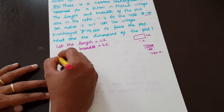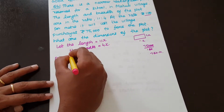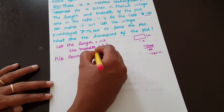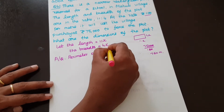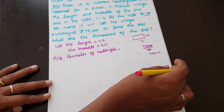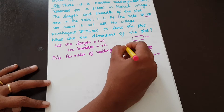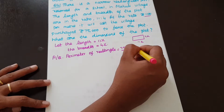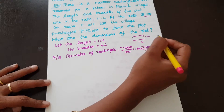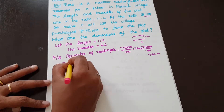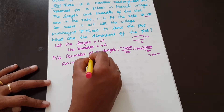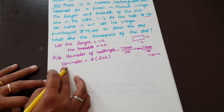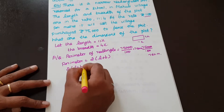According to the question, the perimeter is 750 meters. The perimeter formula is 2(L + B). This gives us 2(11X + 4X) = 750.